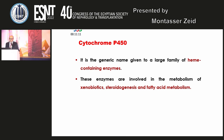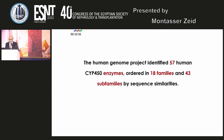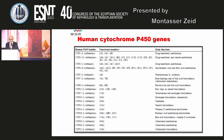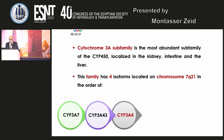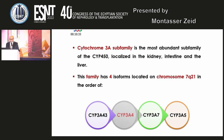Cytochrome P450 is a generic name given to a large family of heme-containing enzymes involved in the metabolism of xenobiotics, steroidogenesis, and fatty acid metabolism. The Human Genome Project identified 57 human cytochrome P450 enzymes in 18 families and 43 subfamilies. The cytochrome 3A subfamily is the most abundant, localized in kidney, intestine, and liver, with four isoforms on chromosome 7: CYP3A43, CYP3A4, CYP3A7, and CYP3A5.